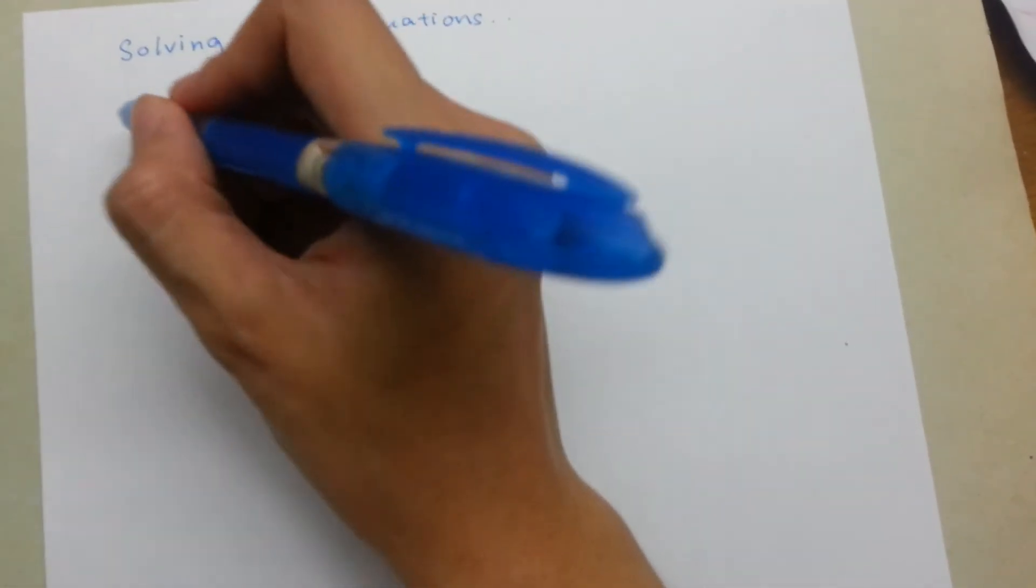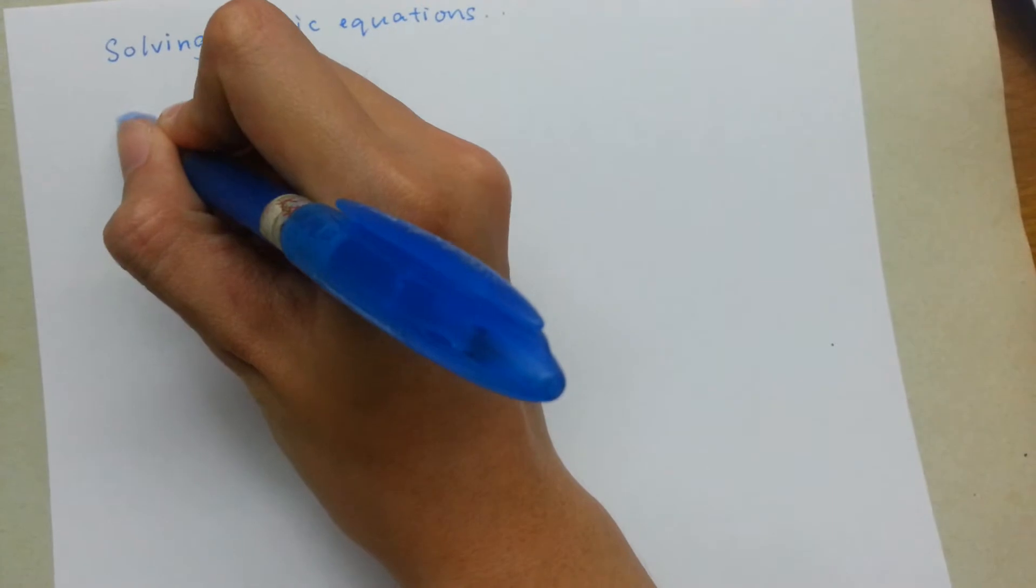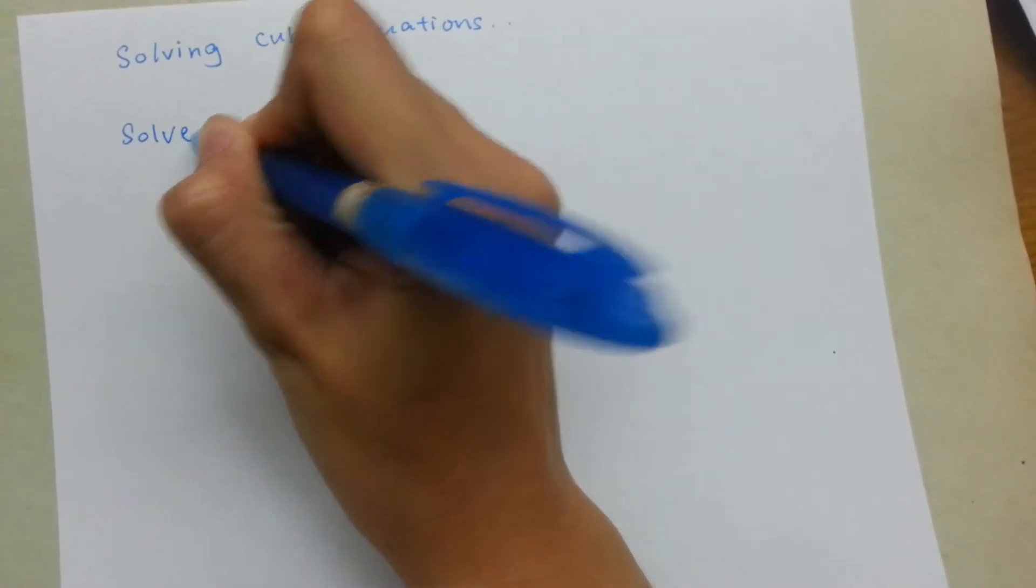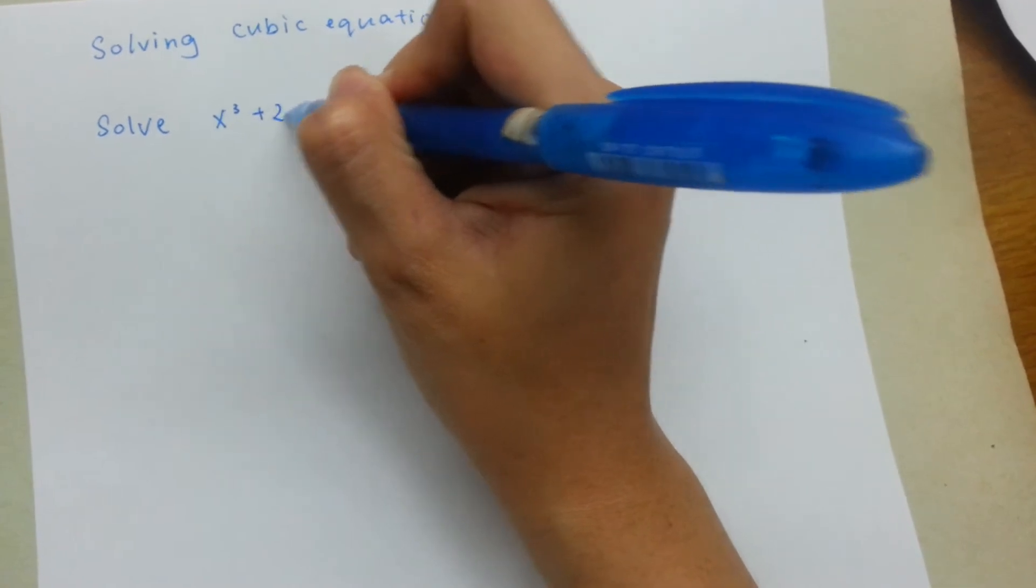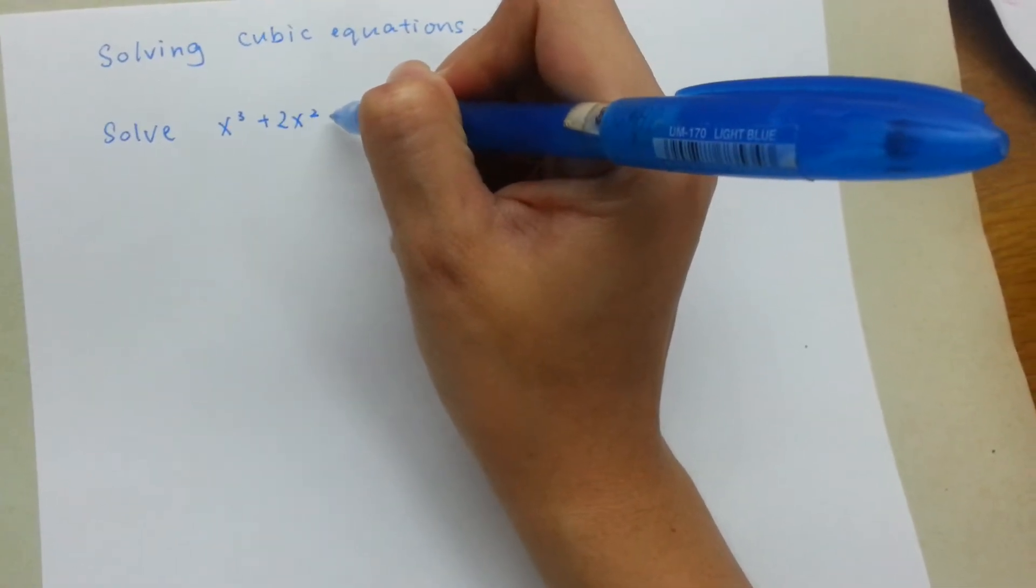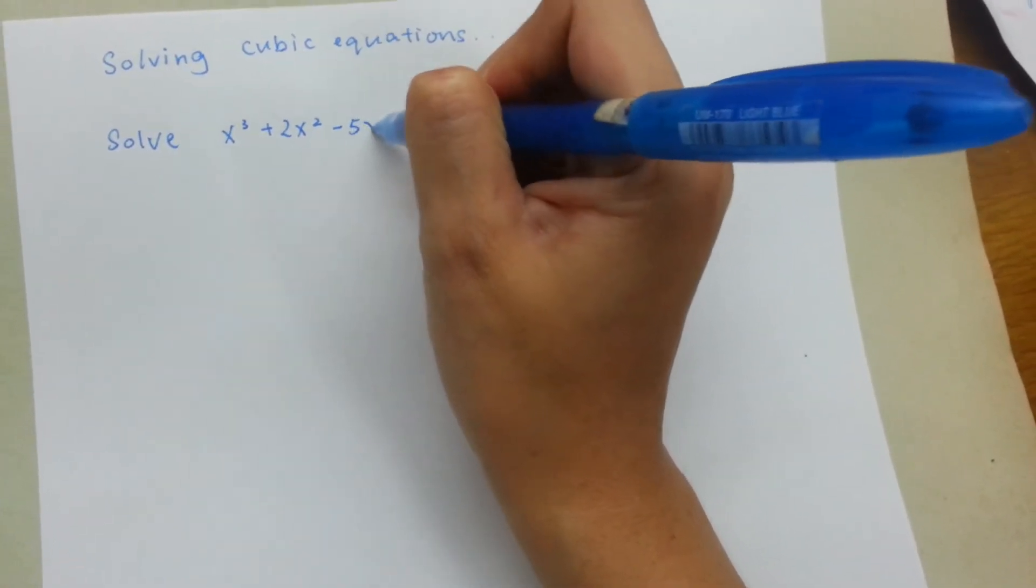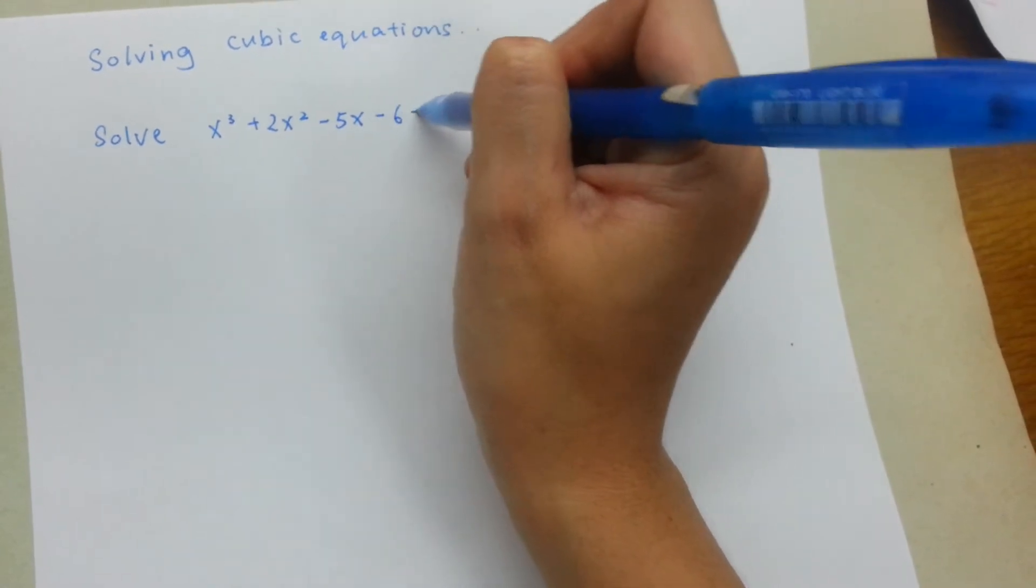For example, a question in the exam might ask you to solve this: Solve x³ + 2x² - 5x - 6 = 0.